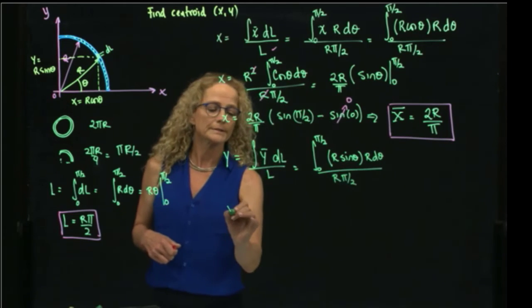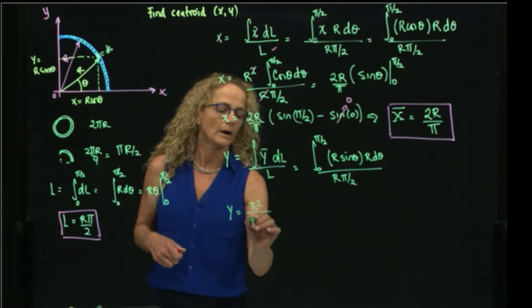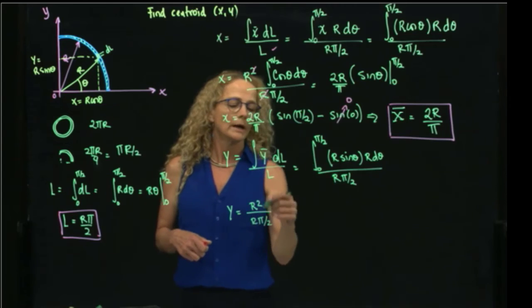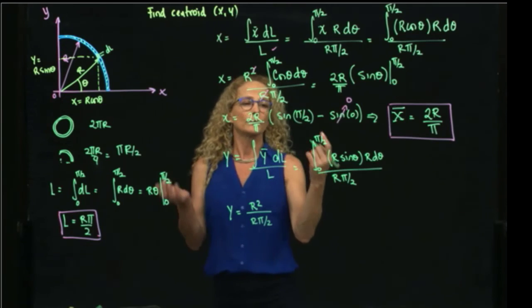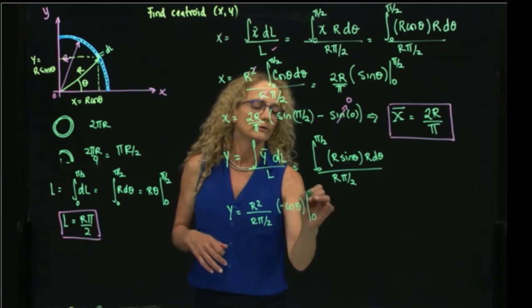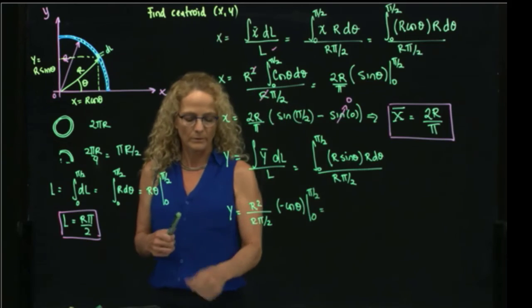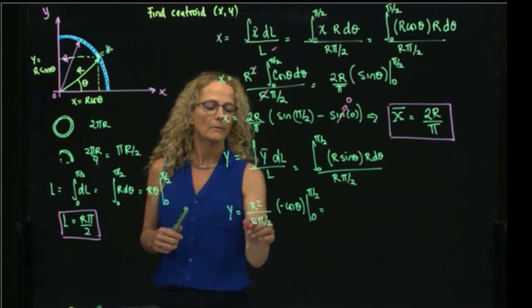And very similarly, we have r squared over r π over 2. And then the integral of sine is the negative cosine of theta, and that evaluated from 0 to π/2. That will be then we cancel out this one with that one,